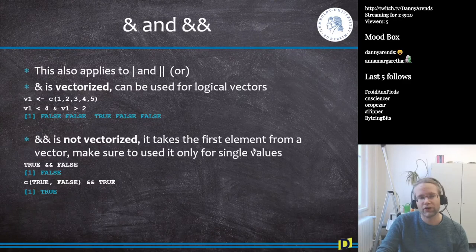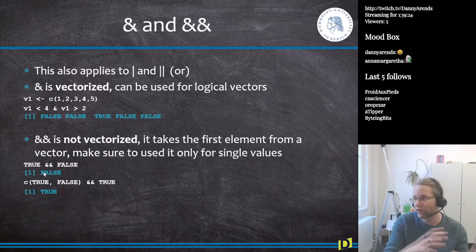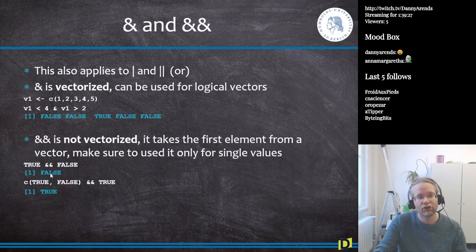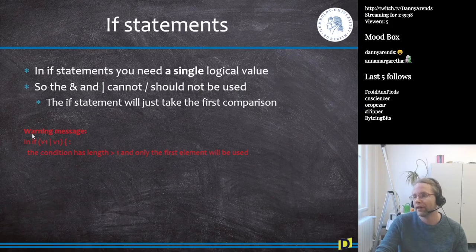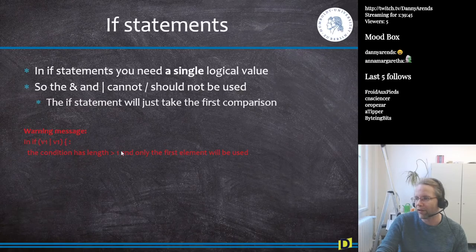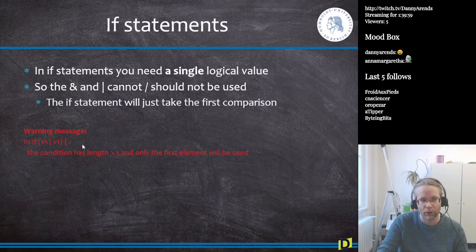The double ampersand `&&` is not vectorized — it only takes the first element of a vector, so use it only for single values. Typically in an if statement checking two conditions simultaneously, you use the double `&&`. R will warn you if you use the single `&` inside an if statement with a vector: 'the condition has length greater than 1 and only the first element will be used.'